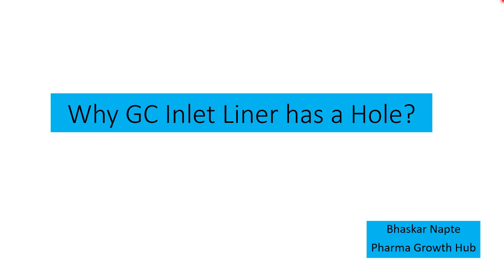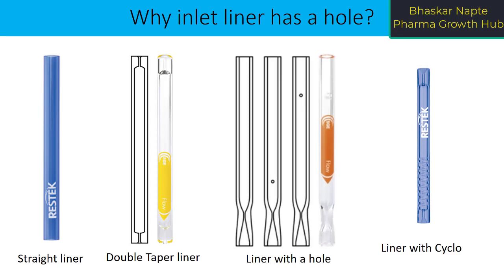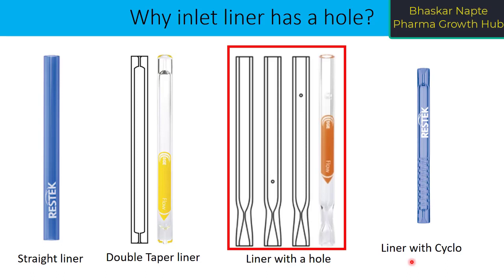Hello and welcome, this is Bhaskar Naptev from Pharma Growth Hub. Today we will try to understand why GC liners have a hole. You must have seen different types of liners ranging from a straight liner, liners with a taper — like in this example there are tapers at two sides, one at the bottom and one at the top, so it's a double taper liner. There are some liners which have a hole also. You can see in the figure there is a hole at the bottom, a hole at the top, and another type is a cyclo liner. In this video we will try to understand what is the reason for having a hole in a liner.